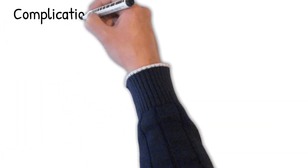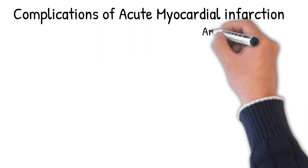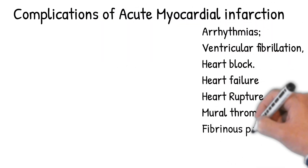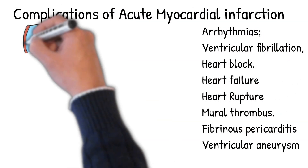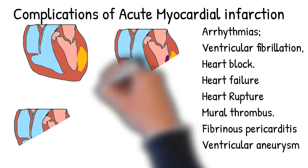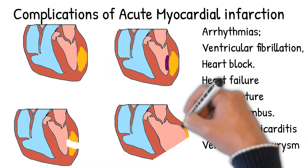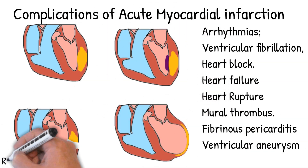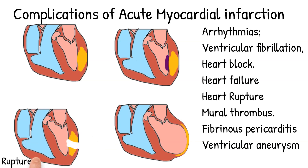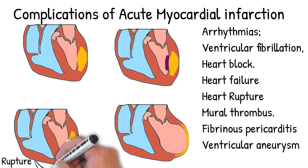Complications of acute myocardial infarction include cardiogenic shock and arrhythmias — premature ventricular contractions are the most common arrhythmia — as well as ventricular fibrillation, heart block, and congestive heart failure, with typical onset within the first 24 hours.